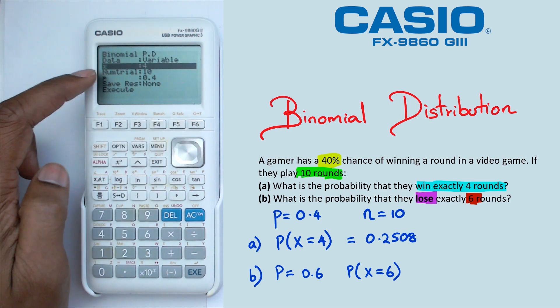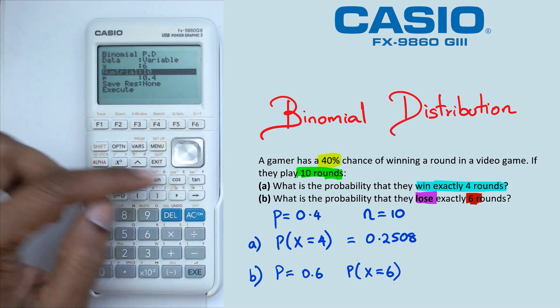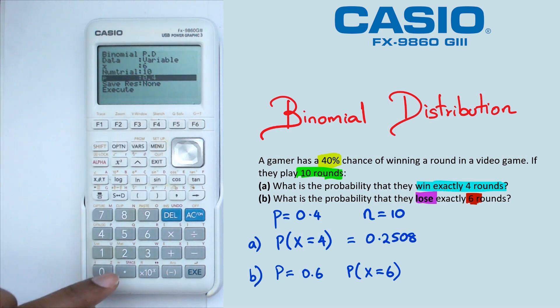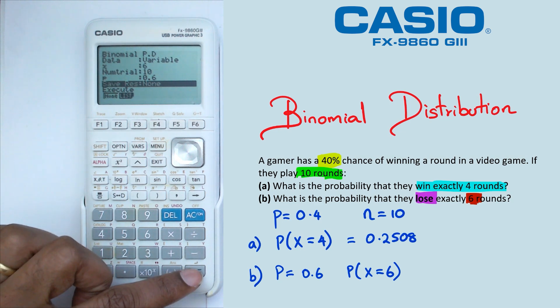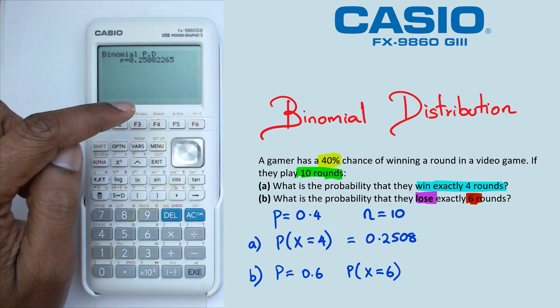So remember that our x is now, we're looking at question two, which is losing six rounds. So that means we're going to change x to six. They're still playing 10 games, but the probability of losing is 0.6. So we need to change that here. And when we do that and press exe, we should get the same probability, which is 0.2508.